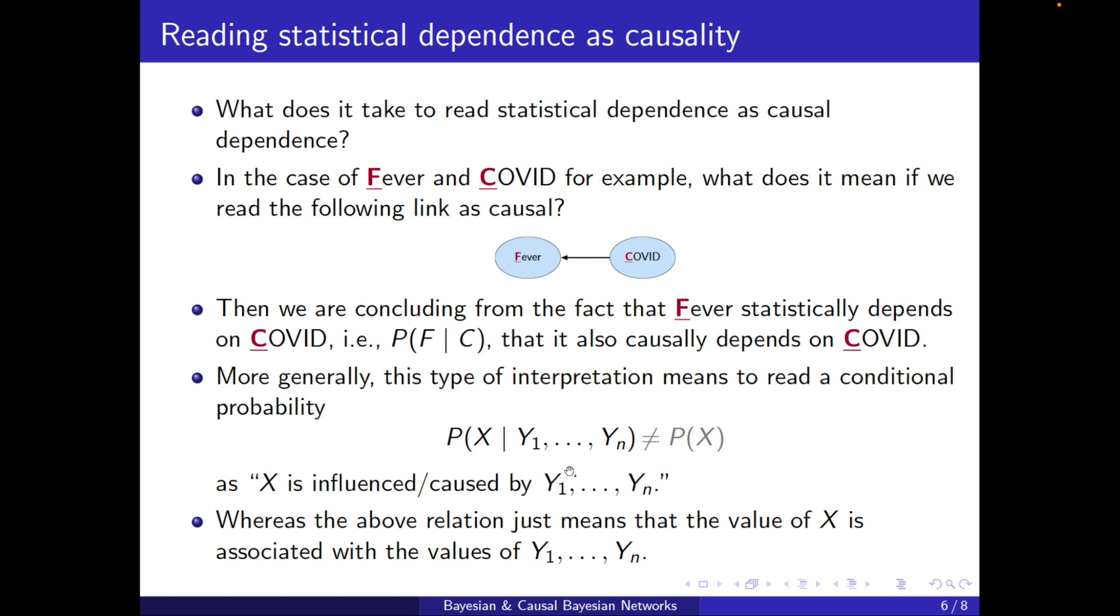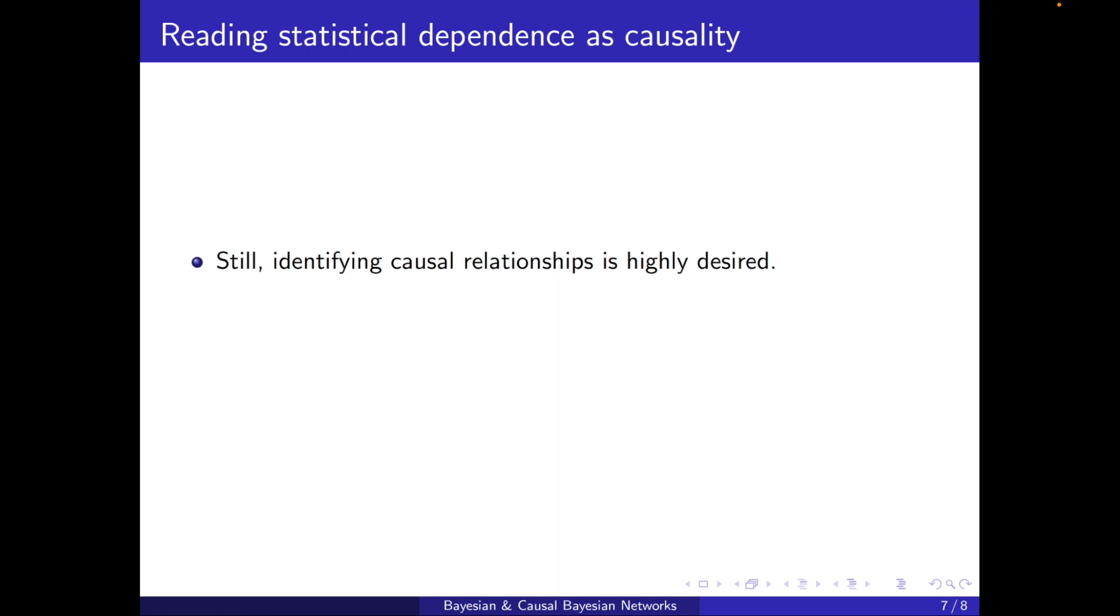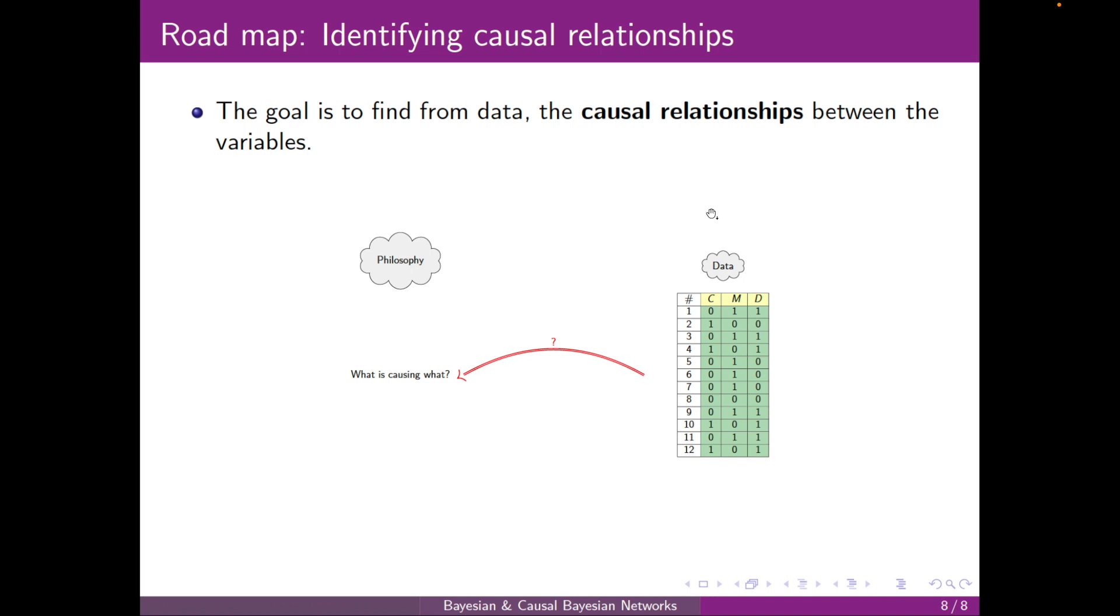Still, identifying causal relationships is highly desired. How to do it? And also, what do all this have to do with controlling or intervening a variable? We'll see more of this in the next lecture. So the goal is ideally to get from data to the question of what is causing what. This is somehow a philosophical question. I will get more to this in the next lecture.